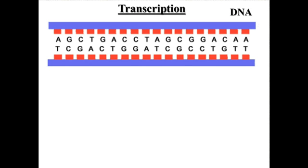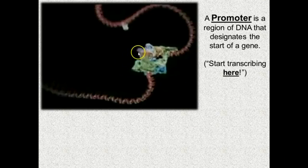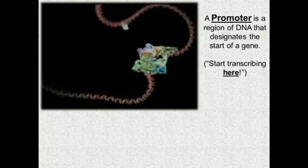In just a minute I'm going to show you a video clip. There are some things I want to point out before we watch. The first thing you're going to see is something called a promoter — a section of DNA that designates the start of the gene. It basically says 'start transcription process here.' You're going to see a little loop happening in the DNA, and that is the process whereby transcription starts. Keep in mind, all of this happens in the nucleus.